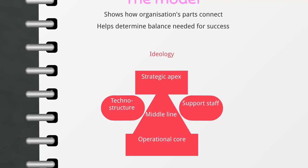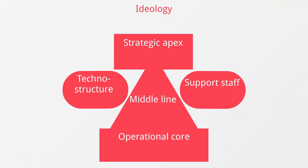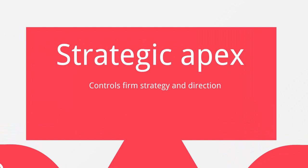Let's bring up the model here. At the top we've got an ideology, and we're going to come back to that. We've also got our strategic apex, our middle line, our operational core, our technostructure, and our support staff. We're going to begin with the strategic apex, which controls the direction as well as the strategy of the firm.